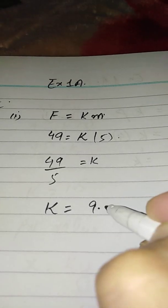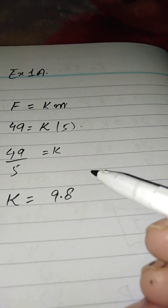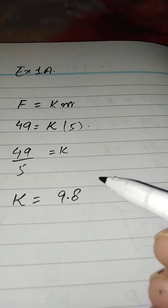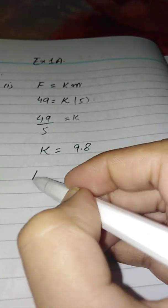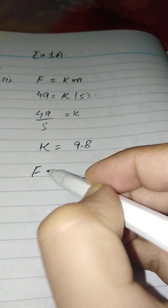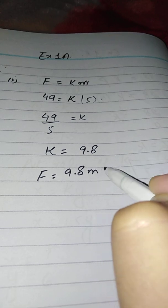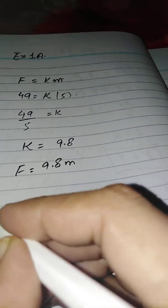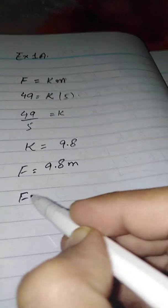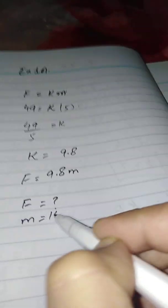Now in part 2, they say find the value of F when M is 14. First, make the equation: F equals KM, so F equals 9.8M. Part 1 is done. Now in part 2, you have to find the value of F when M is 14.